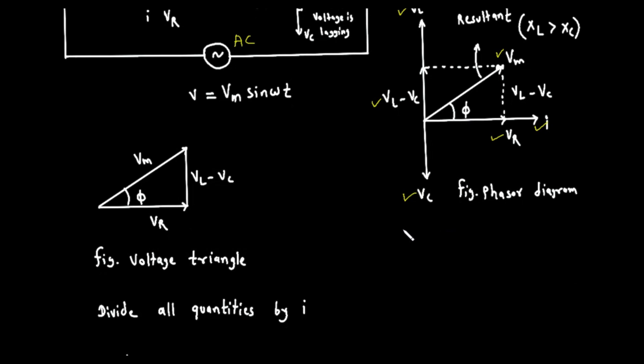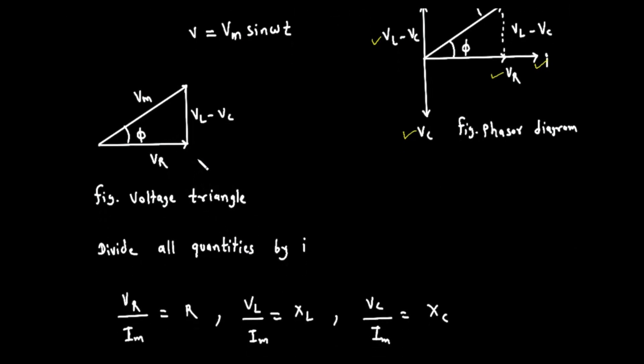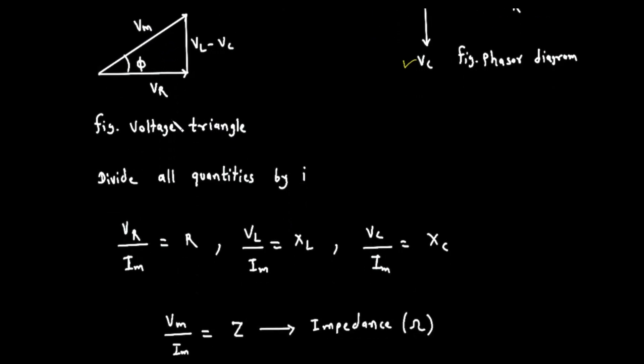Part 3, From the Voltage Triangle to the Impedance Triangle. The right-angled triangle we just formed in the phasor diagram is called the voltage triangle. Its horizontal base is V sub R. Its vertical side is V sub L minus V sub C. Its hypotenuse is the total peak voltage, V sub M. Now, let's follow the instruction on the page, divide all quantities by I. Specifically, we will divide the peak voltage of each side by the peak current, I sub M.